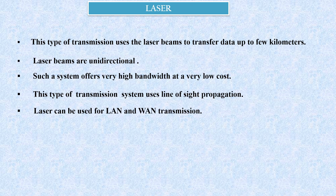The last wireless media is laser. This type of transmission uses a laser beam to transfer data up to a few kilometers. Laser beams are unidirectional and travel in a straight line from the source. Such a system offers very high bandwidth at very low cost, and uses line-of-sight propagation — so the source and destination should be in line of sight. Laser can be used for LAN and WAN transmission. Laser beams cannot transmit through thick fog, and on hot, sunny days these waves are affected by hot turbulent air.